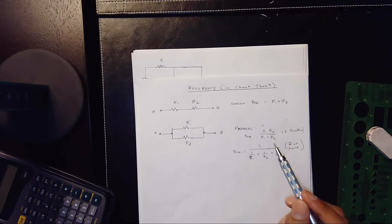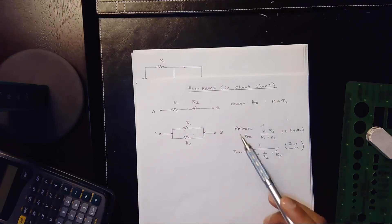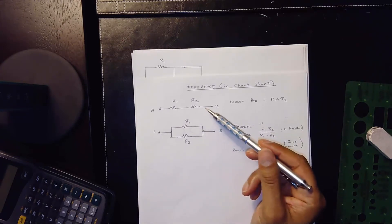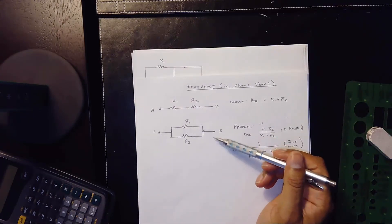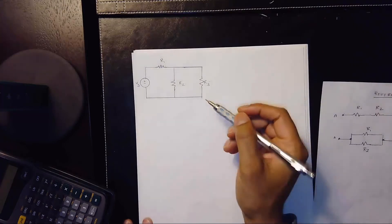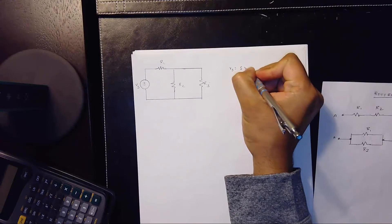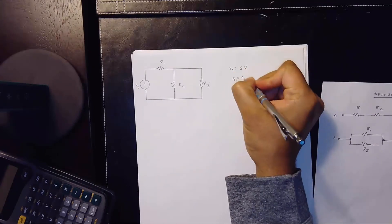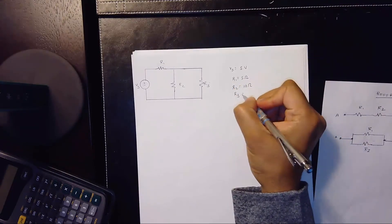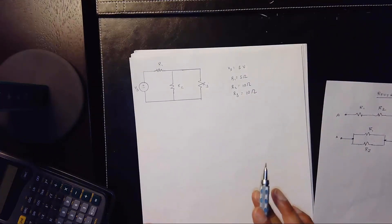Pause the video right here and copy this equation sheet, as you'll use it as a reference throughout all circuit problems. Now let's get started with an example. We have a basic circuit with VS equals 5 volts, R1 equals 5 ohms, R2 equals 10 ohms, and R3 equals 10 ohms, keeping numbers simple.